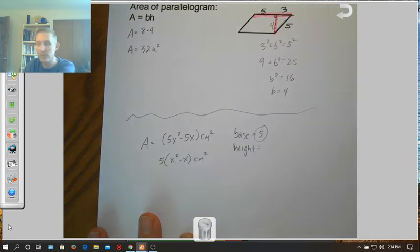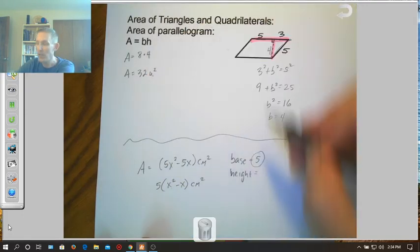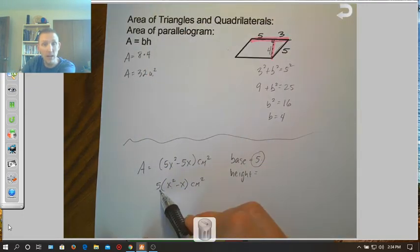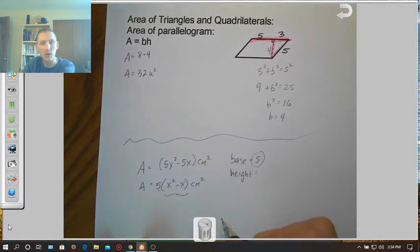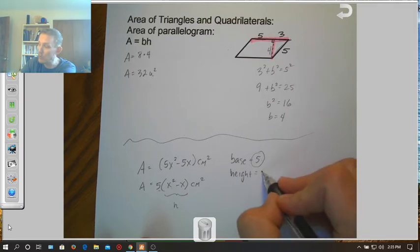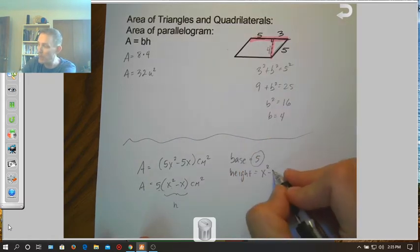Well, the reason why I wanted to factor out the 5 is because if I come back up here and I look at base times height, and I know the base is 5, well, I can put that in front of parentheses. Well, what is the 5 multiplying by? The x squared minus x is your height. So if I'm going to find the height, height equals x squared minus x.